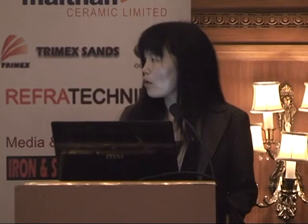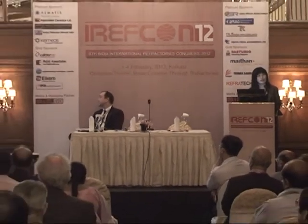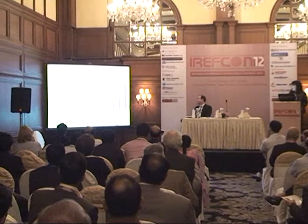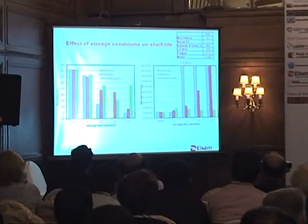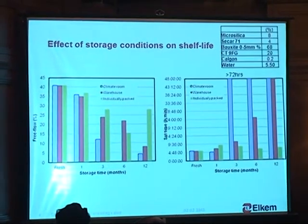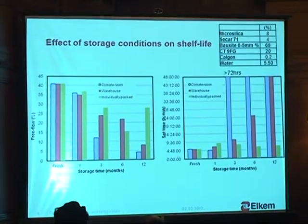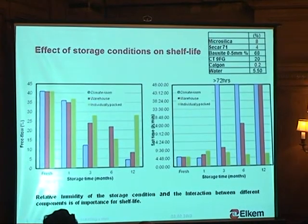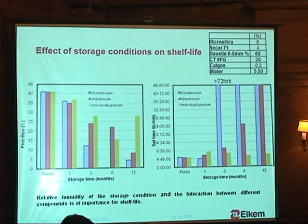Flowability is one thing, but the materials also have to be safe in terms of setting time. Fresh materials are fine — four to five hours. One month is okay. But after three months, the blue curve from the climate room shows the material is still soft after three days, meaning the material is completely destroyed. For materials stored in the warehouse, after six months the setting time gets extended, but it is still set after one day. This gives some indications that relative humidity and the interaction between different components are important for shelf life.